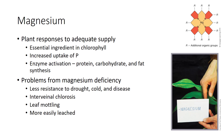Sand-based golf greens have a low CEC and are heavily irrigated, so magnesium shortages often lead to poor turf color. Magnesium also leaches readily from greenhouse potting soils, so greenhouses often use high-magnesium fertilizers. High levels of soil potassium may also induce a magnesium shortage in plants. Hunger signs result from low levels of chlorophyll, including interveinal chlorosis and mottling of older leaves.